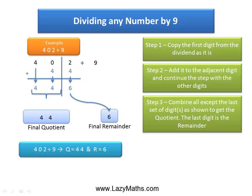by 9 gives quotient 44 and remainder 6. That's it. Thank you.